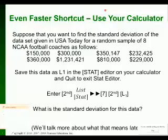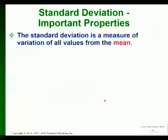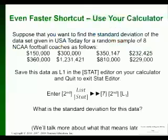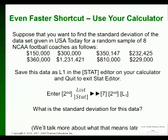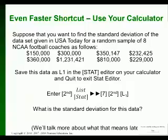Write down that standard deviation: 371,574.5. Right now we don't know what that means — the standard deviation is 371,000, and that means nothing to me yet, but it's going to mean something in a few minutes. So just write it down now, and then we'll talk about what it means in just a minute.